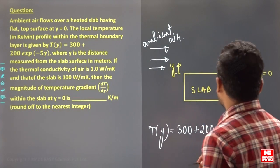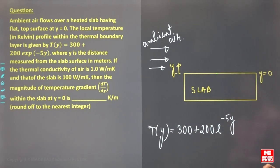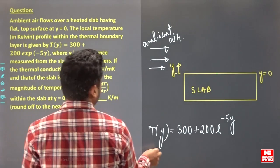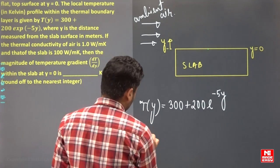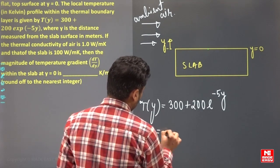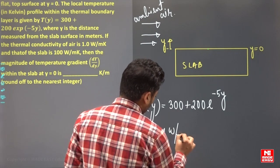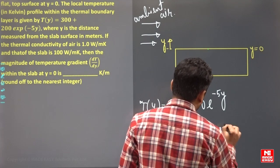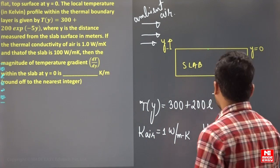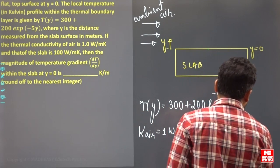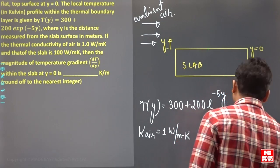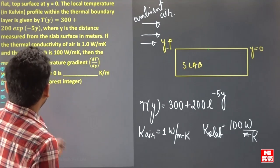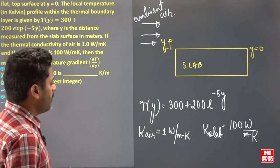The temperature is T equals 300 plus 200 e to the power of minus 5y, where y is the distance measured from the slab surface in meters. The conductivity of air is given as 1 watt per meter Kelvin, and the conductivity of the slab is given as 100 watt per meter Kelvin.